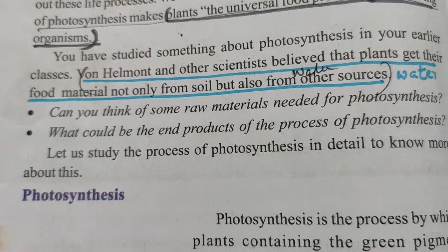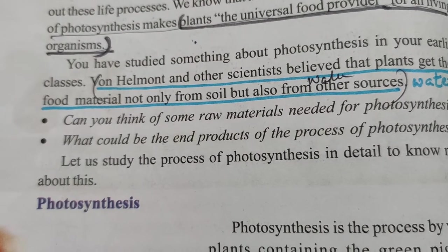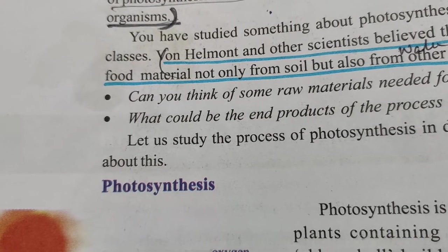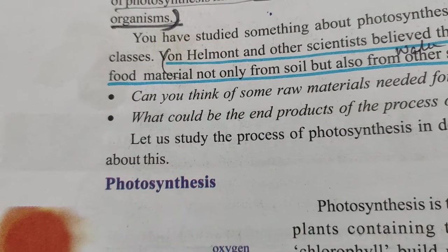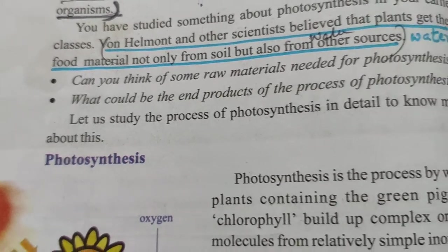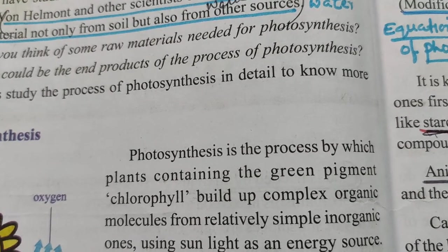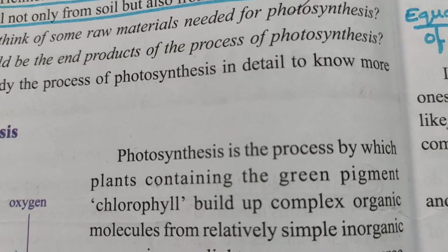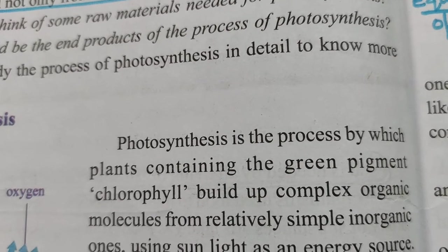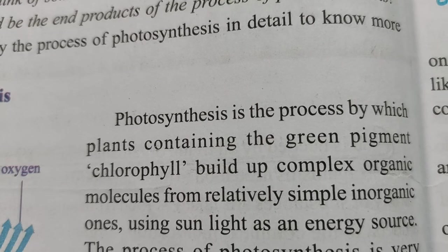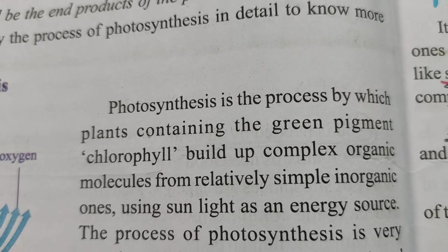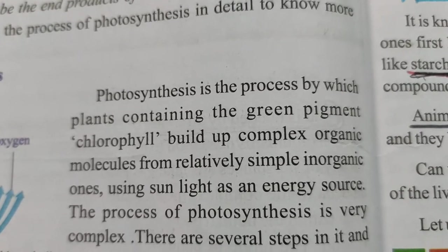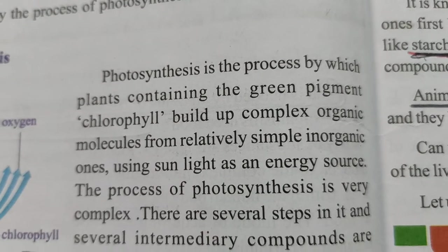The process by which plants prepare their food is known as photosynthesis. Photo means light and synthesis means preparation. Photosynthesis is a process by which plants containing the green pigment chlorophyll build up complex organic molecules from relatively simple inorganic ones, using sunlight as an energy source. This process of photosynthesis is very complex.